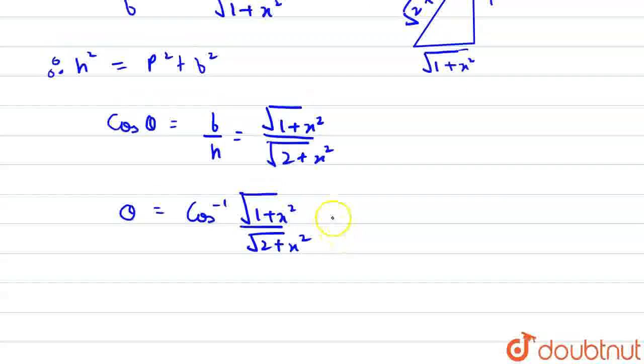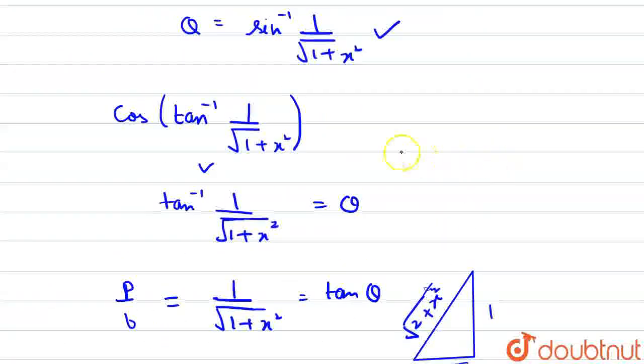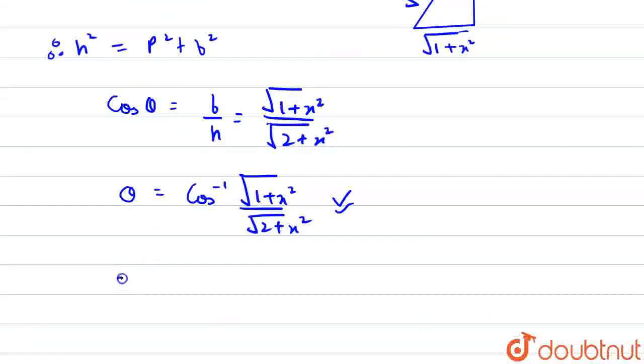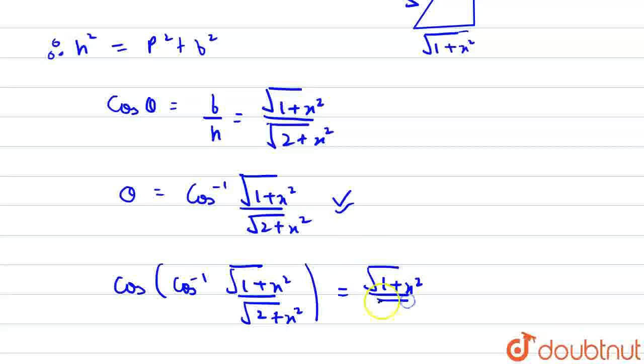Now, putting this theta in place of tan inverse we will get cos of cos inverse root of 1 plus x squared upon root of 2 plus x squared, which is equal to root of 1 plus x squared upon root of 2 plus x squared. Which is our answer. Thank you.